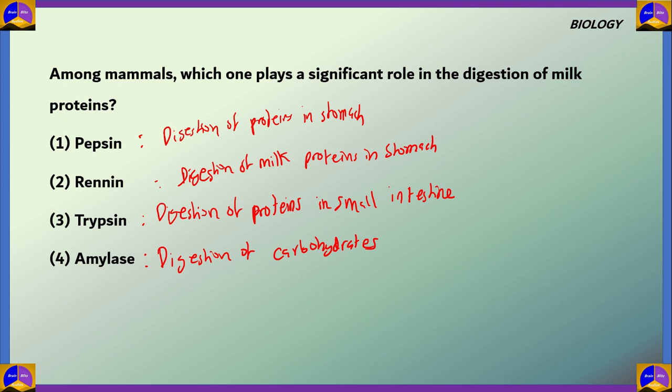And rennin is also secreted in the stomach which is specifically for milk proteins. So the question is asking which of those plays a significant role in the digestion of milk protein. We already got the answer. If you look at the other options, option 4 would be incorrect because it is not talking about proteins at all, it's about carbohydrates. Now options 1 and 3 can also be eliminated because the question is asking which one plays a significant role. Even though pepsin and trypsin may digest some of the proteins present in milk, it's not playing a significant role in its digestion. Rennin is specifically for the digestion of milk protein. So option 2 rennin is the correct answer for this question.